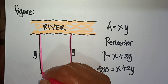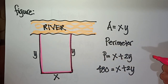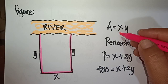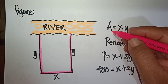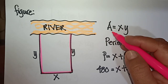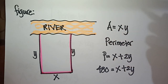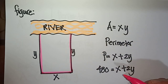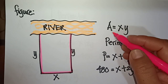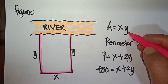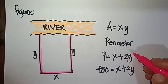Since we want maximum area, we need to find the derivative of the area. The formula for area in this problem is A = x times y. We also need a second formula to work with.